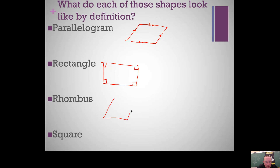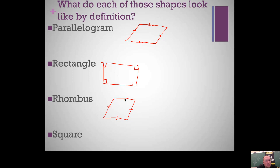Rhombuses — or rhombi — look like a square only slanted. Just because it looks like one doesn't mean it is; you need the congruent side marks to prove it's a rhombus. The opposite sides being congruent is what makes it a parallelogram, so a rhombus is a parallelogram with four congruent sides.